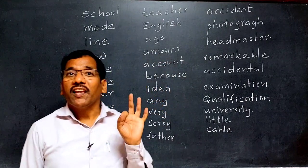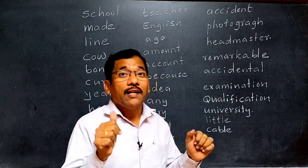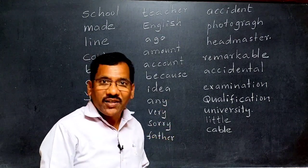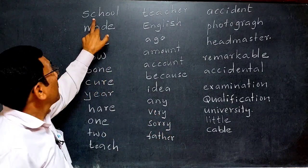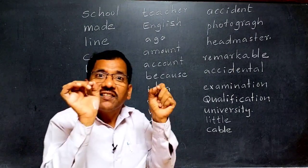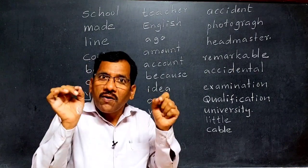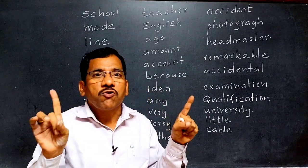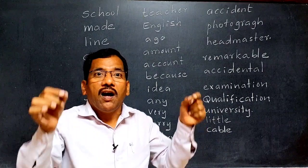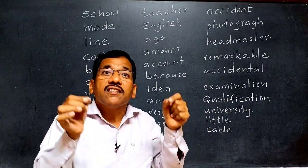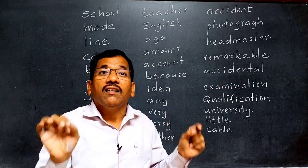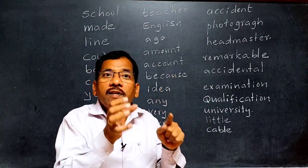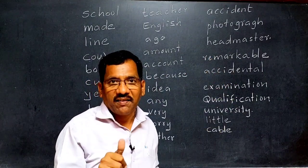Now let us see some examples of how syllables are counted. A very important point: when counting syllables, count vowel sounds — not vowel letters and not consonant letters. The number of vowel sounds in a word determines the number of syllables. If the vowel sound changes, the number of syllables changes.